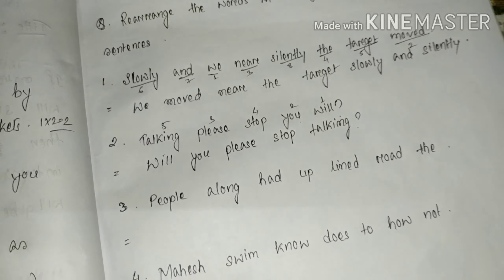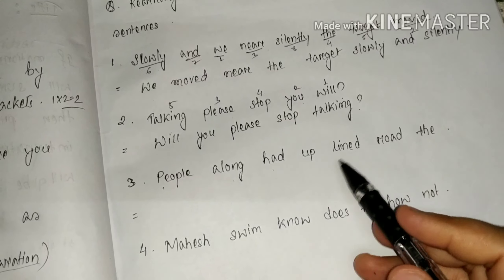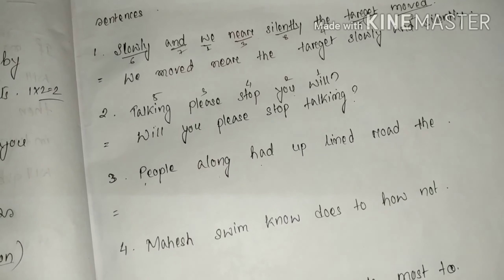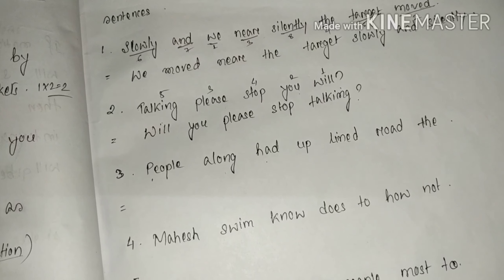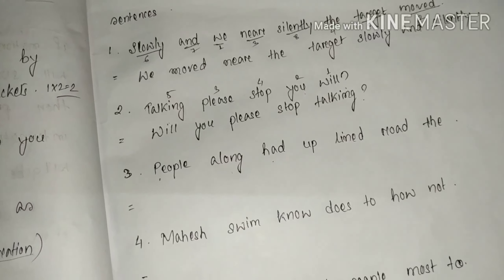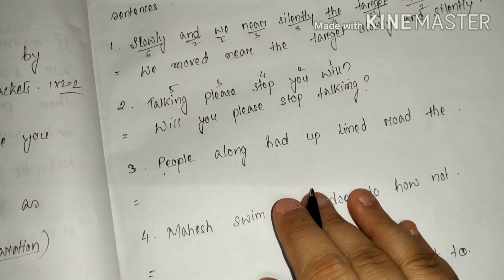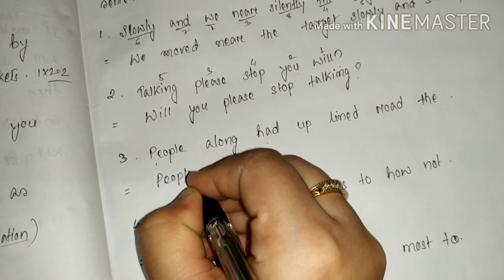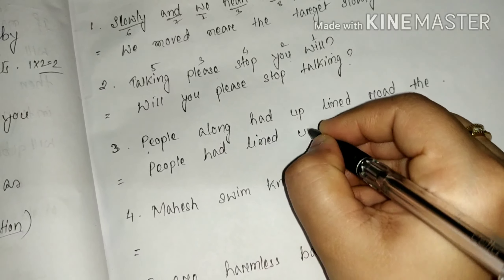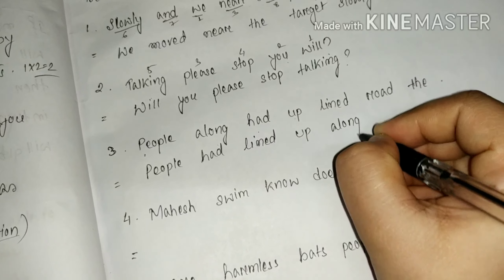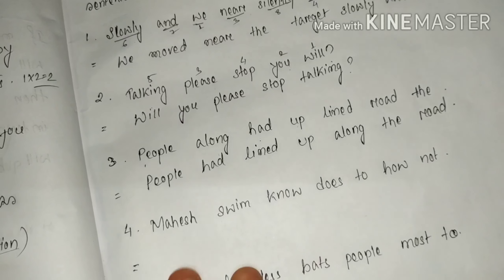Next, see again the words: people, along, head, up, lined, road. What can we make out of these words? People had lined up along the road. Yes! People had lined up along the road. Isn't this as simple as that? Very simple.